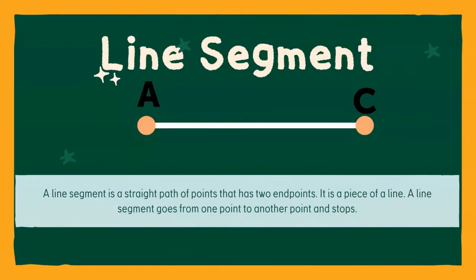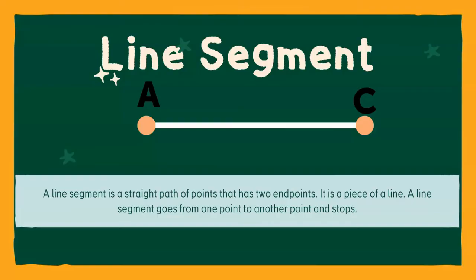We also have something called a line segment. A line segment is a straight path of points that actually has two end points — a starting point and a stopping point. It's just a piece of a line. A good example is, again, when you're riding in the backseat of the car. If you look down the center of the road, oftentimes you'll see a dashed line. Each of those dashes can be considered a line segment because it's part of a line. A line segment goes from one point to another point and then it stops. So in our example, we have point A, which is the start, and it goes to point C, and then it stops.